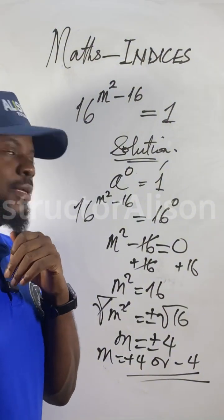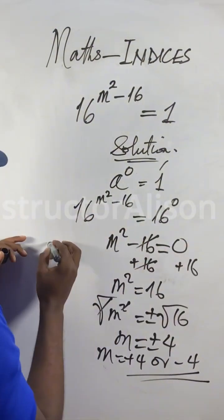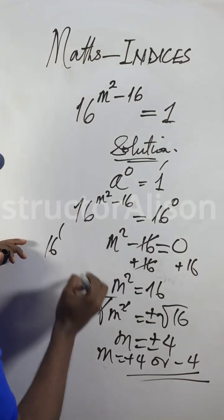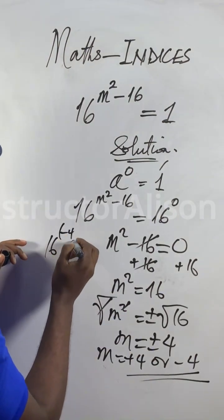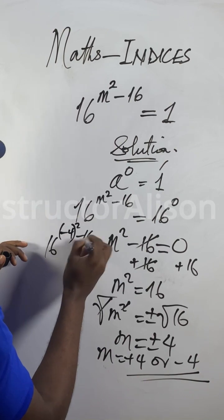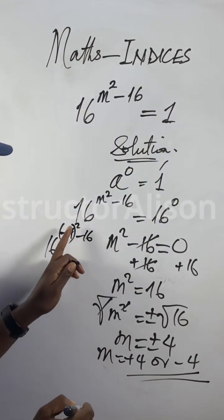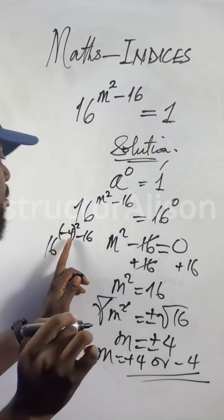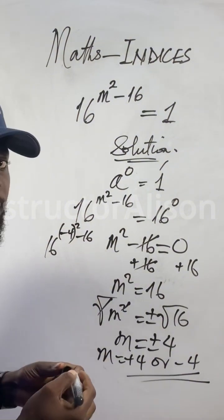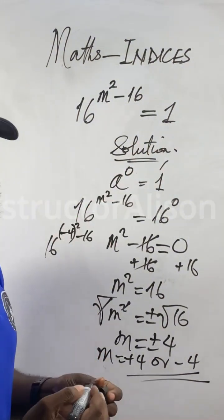Let me make a test. So if you get 16 to the power of m, m has value minus 4, squared minus 16. m is minus 4. Minus 4 squared will give you plus 16. 16 minus 16, that will be 0. 16 to the power of 0 is 1.